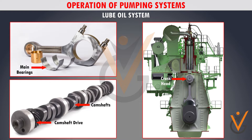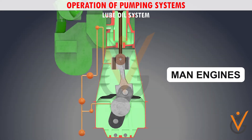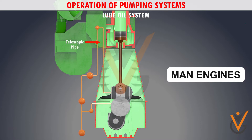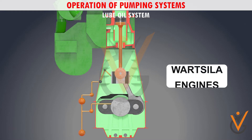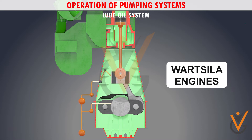A branch of lube oil goes to the crosshead. In MAN engines, the lube oil line is connected to the inlet in the crosshead using a telescopic pipe — it moves up and down along with the crosshead and oil is supplied from the top. In Wartsila engines, an articulated or swinging arm is attached to the crosshead, which supplies the inlet oil.